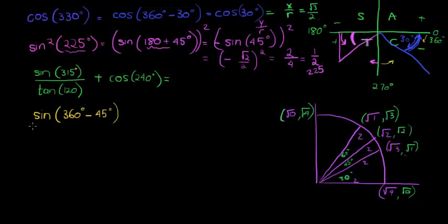So sine of 315 is 360 degrees minus 45 degrees. Again, if I simplify this interior, I'll get 315. Tan of 120 in terms of 180 minus, 180 plus or 360 minus. We see 120 is second quadrant because it's less than 180, more than 90. So we get 180 degrees minus what? To get 120 minus 60.